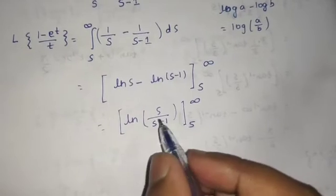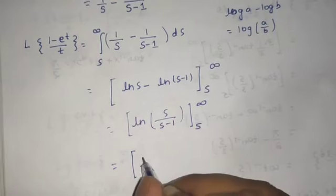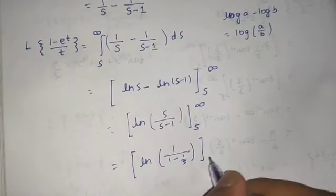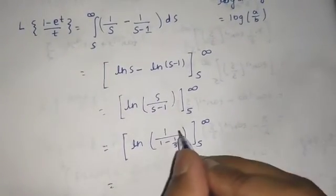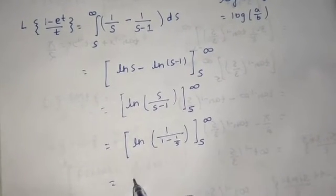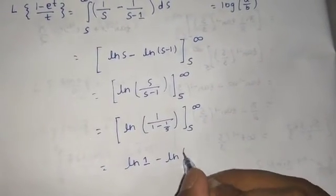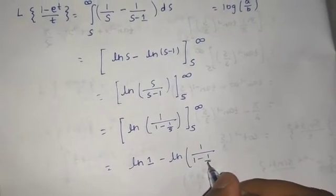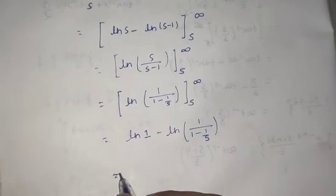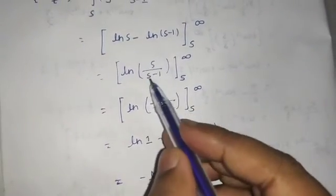Since we have infinity as the upper limit, we divide the numerator and denominator by s to get ln of 1 divided by 1 minus 1 by s. Putting in infinity, 1 upon infinity is 0, so we get ln 1 which is 0. For the lower limit, we get ln of 1 upon 1 minus 1 upon s. Since log 1 is 0, the upper limit term vanishes.